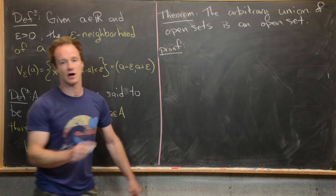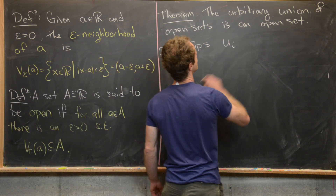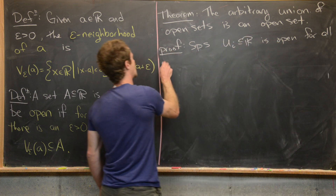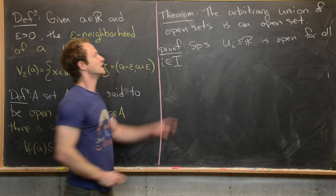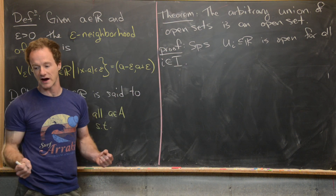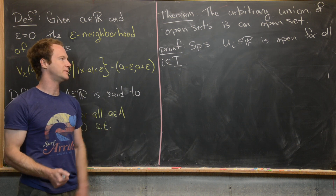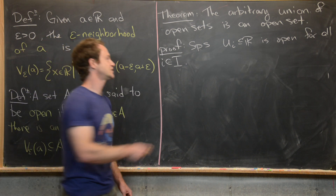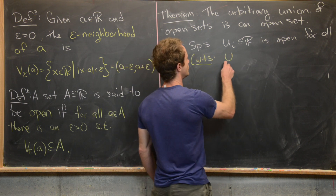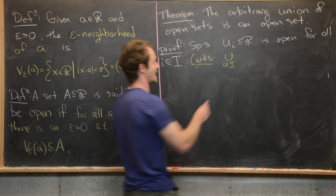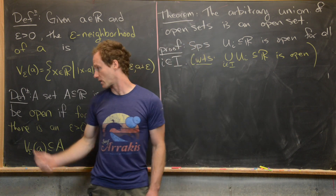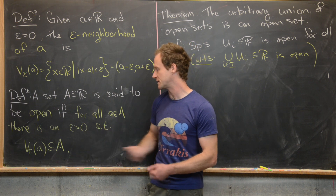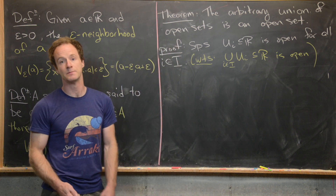We start with an arbitrary collection of open sets: suppose U_i is an open subset of R for all i from an indexing set I, which could be finite, countably infinite, or uncountably infinite. Our goal is to show that the union over all i in I of U_i is open. By our precise definition, we need to take an arbitrary element from this union and find some epsilon greater than zero where that epsilon neighborhood is completely contained in the union.